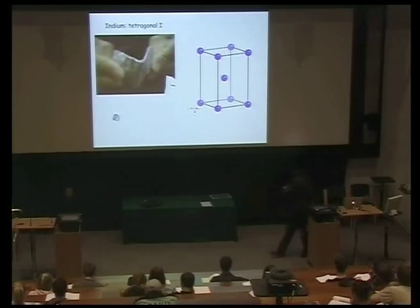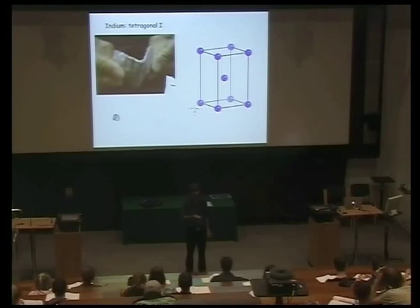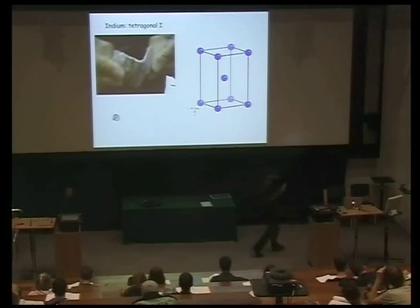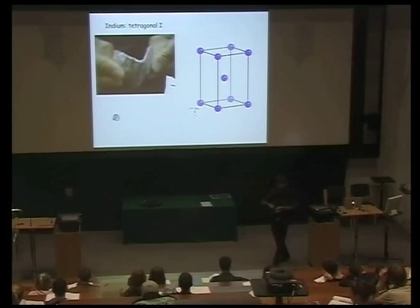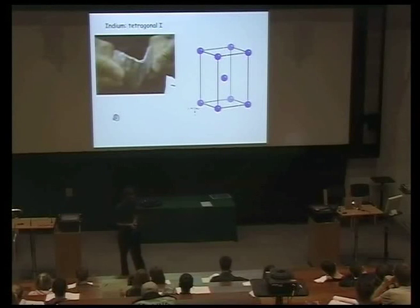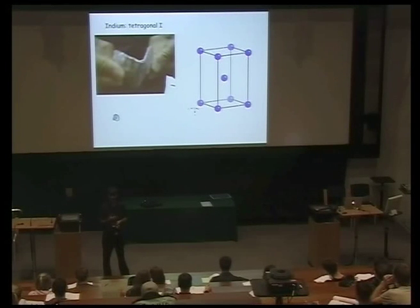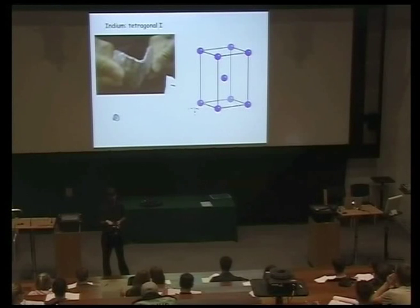Twinning tends to happen when the crystal structure is complicated and doesn't have too much symmetry, so slip becomes difficult. Or when we deform the material at an extremely high strain rate, so ordinary dislocations don't have time to respond to the applied stress. For example, if we put some explosive and blow up a piece of metal — ordinarily it would deform by slip — but when you have an explosion, you will be able to pick up mechanical twins inside your metal.